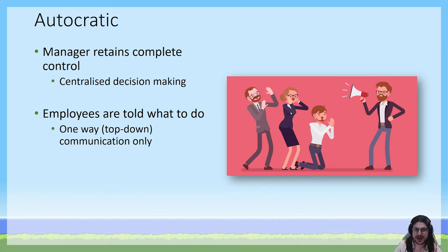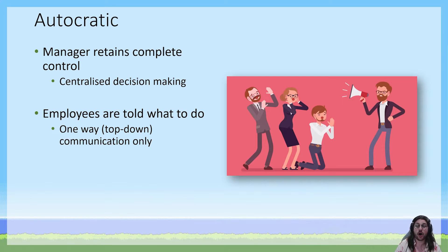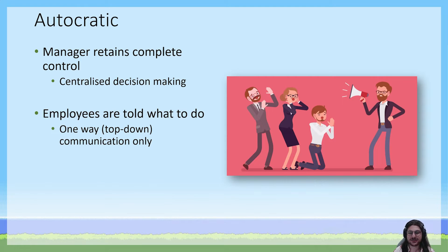An autocratic management style is defined by the manager using centralized decision making. The manager retains complete control for all decisions to be made, and the employees are only told what to do. There is one-way, downward, top-down communication. Employees are not empowered to give feedback or asked for their input. The manager uses their own opinion and expertise to make decisions and tells the employees what to do.